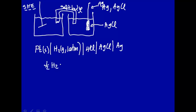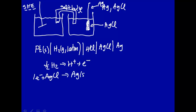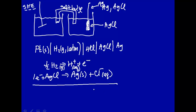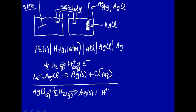Writing the half reactions: one-half H₂ goes to H⁺ and gives out one electron, which flows through the circuit. For the silver–silver chloride side, we add one electron to the AgCl: silver is plus-one charge, so adding one electron makes solid silver and aqueous Cl⁻. Our overall reaction is: AgCl(s) + ½H₂(g) → Ag(s) + H⁺(aq) + Cl⁻(aq).